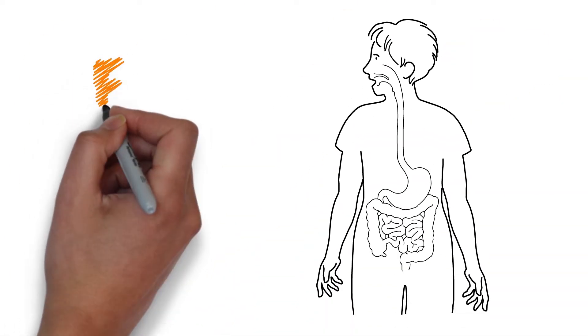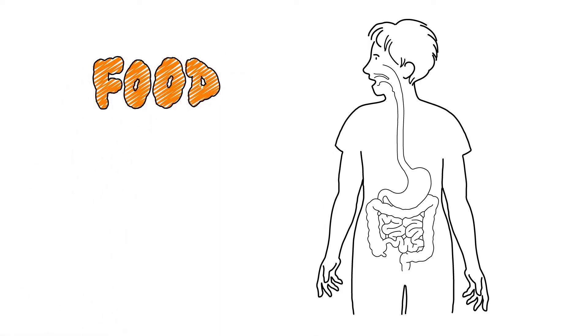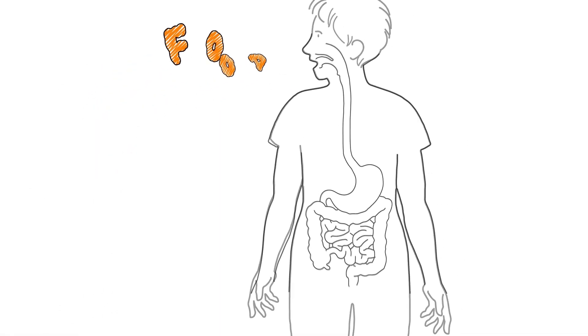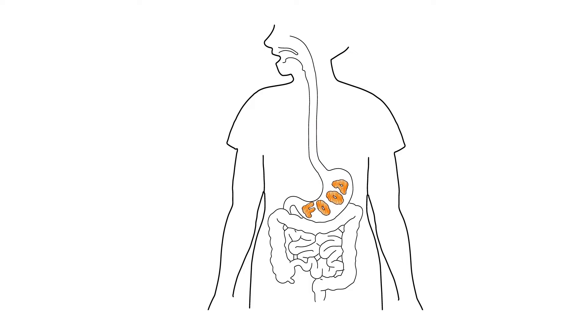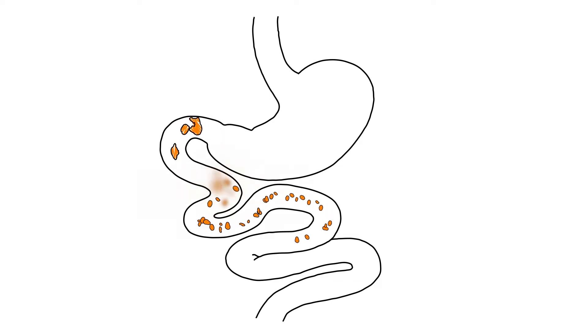Digestion is the process the body uses to break down food so nutrients and energy can be absorbed. When food is swallowed, it travels down the esophagus into the stomach. The stomach muscles churn food to break it into smaller pieces. The muscles then squeeze to move the food into the small intestine. From there, food is fully digested and the body absorbs what it needs.